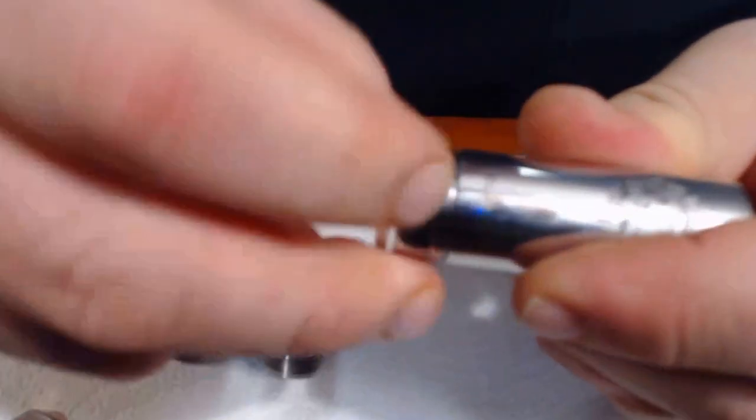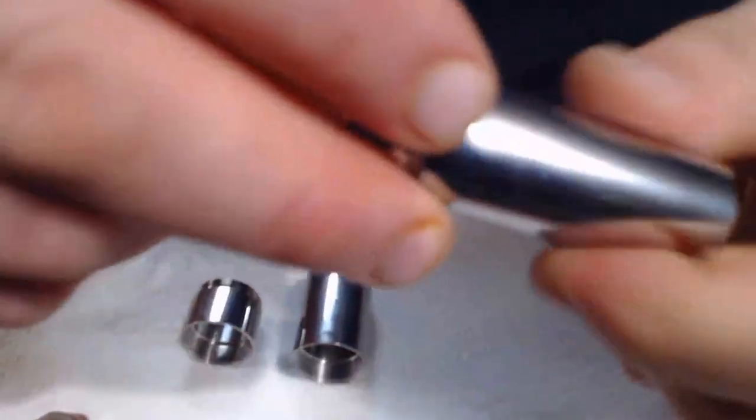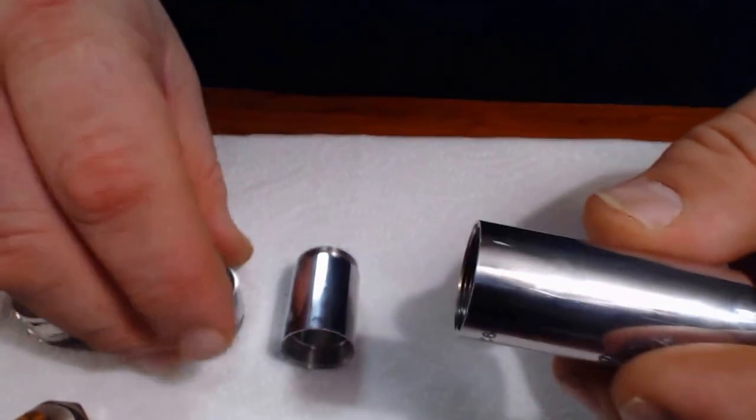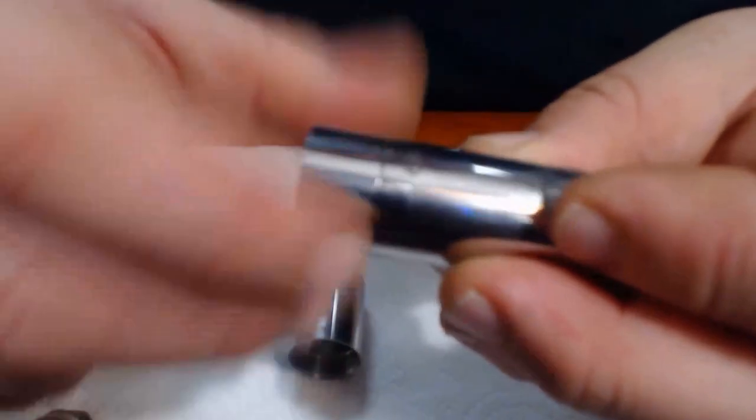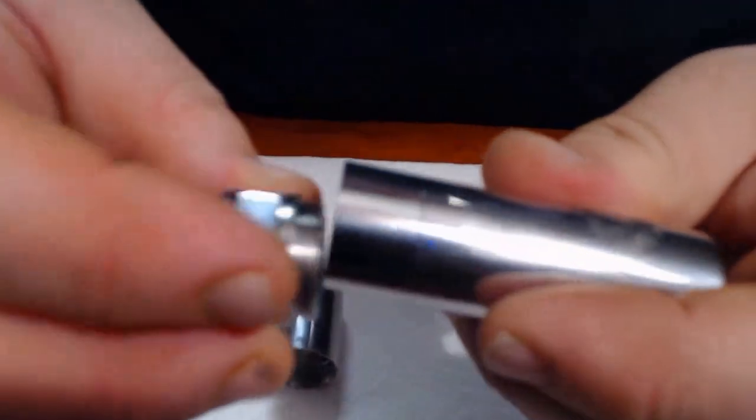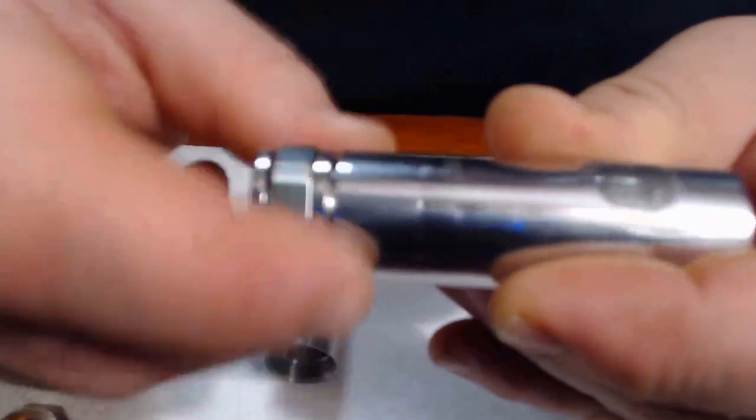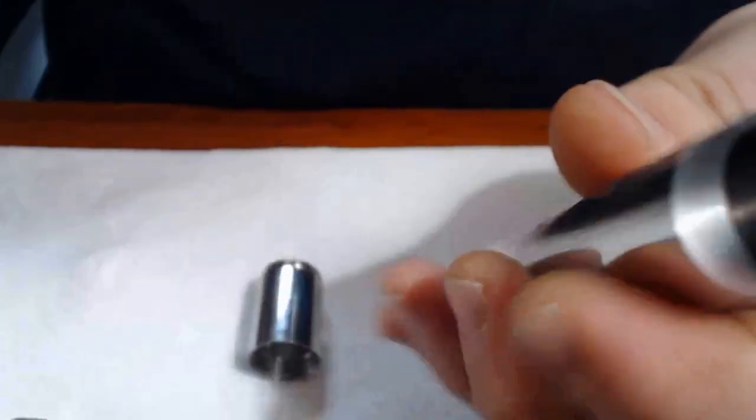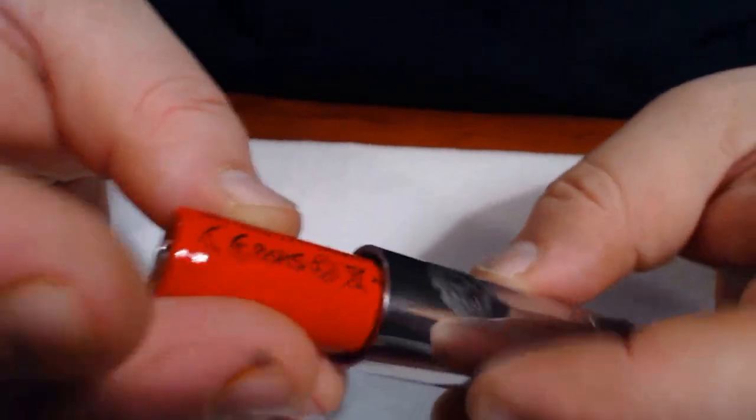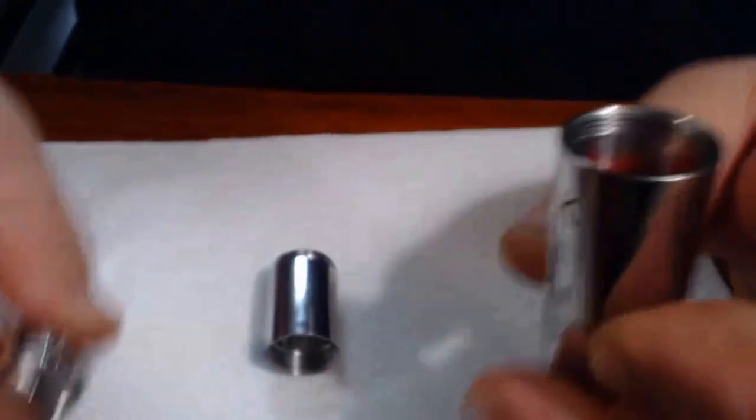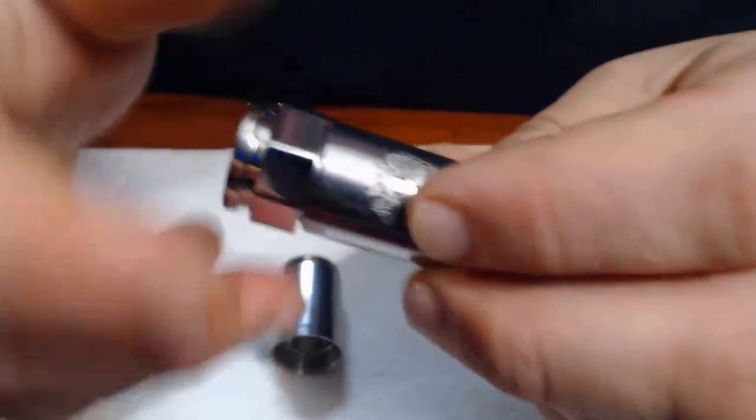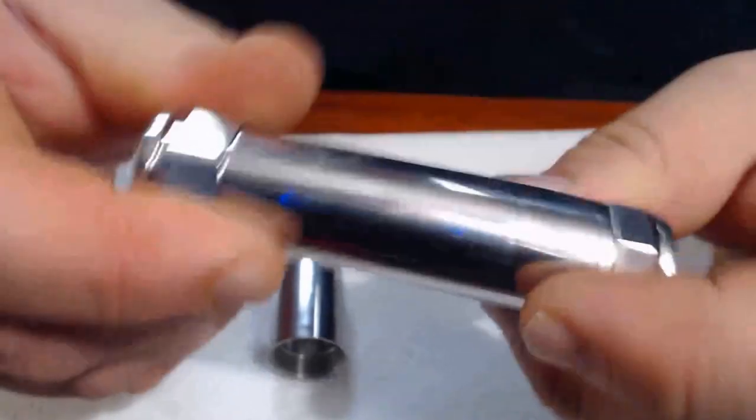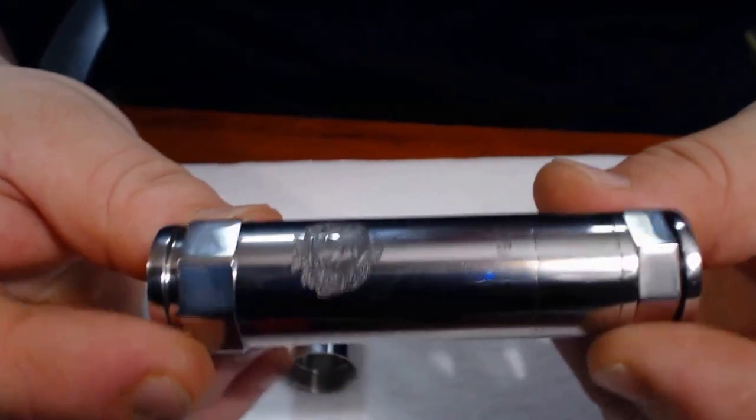We'll add the next piece of tubing, the 18490 tubing. Screw the bottom in, drop our 18490 battery in, and that's what she looks like.